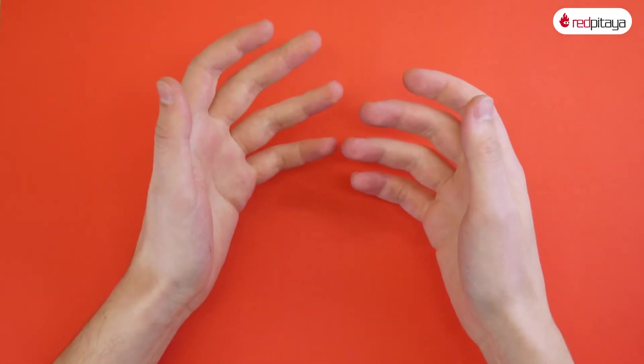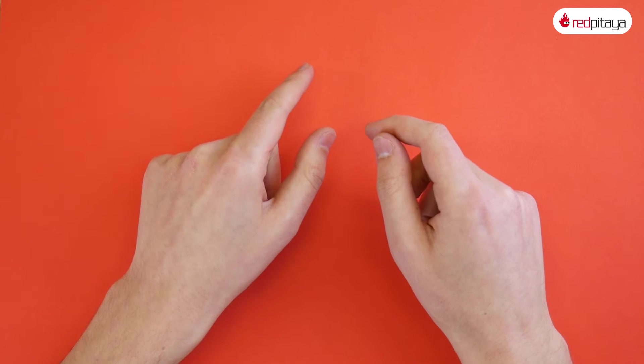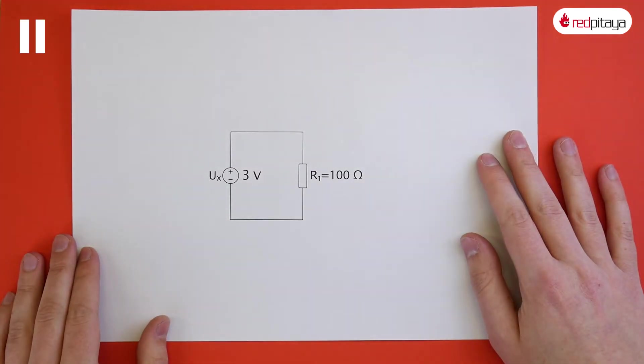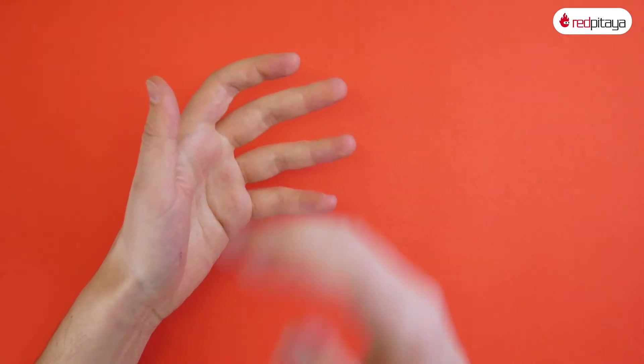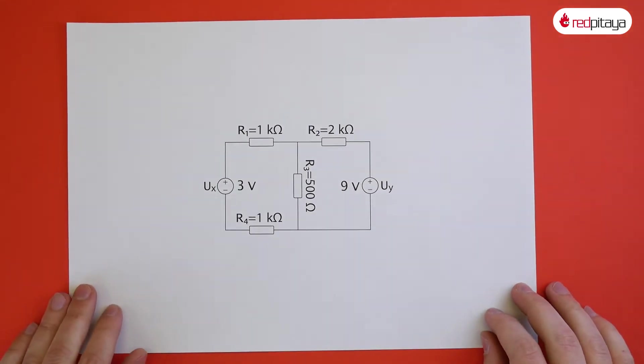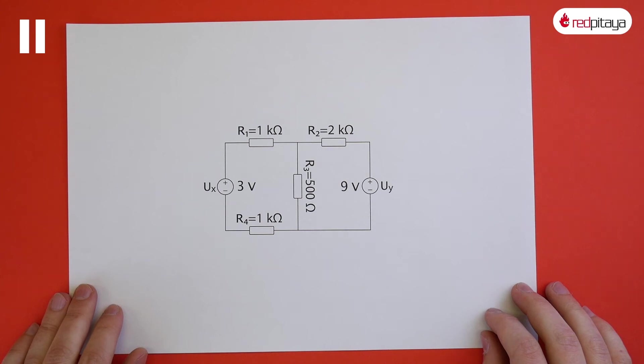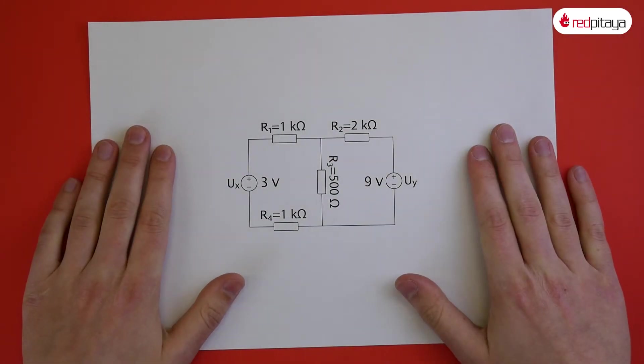Before we conclude this video, a practice example would be in order. Calculate the current and power dissipation for this. Okay, wait, I'm sorry. This was insulting to your intelligence. It's normal that you can't solve this circuit, as I haven't told you about the Kirchhoff's laws. He left us with a pair of them.